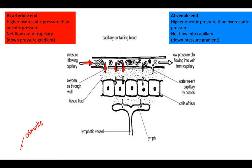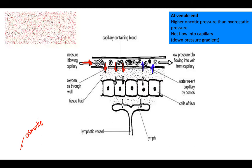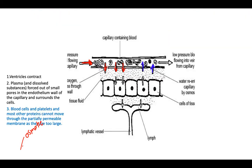Why do things get forced out at the arterial end? The ventricles contract, and that causes the high hydrostatic pressure.